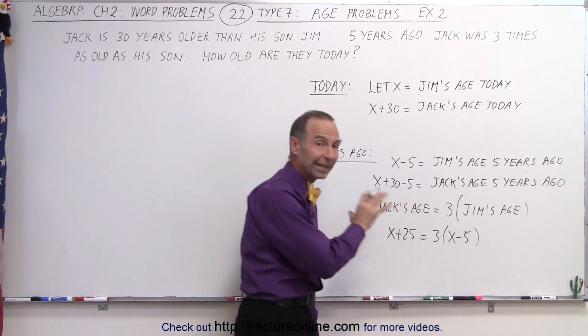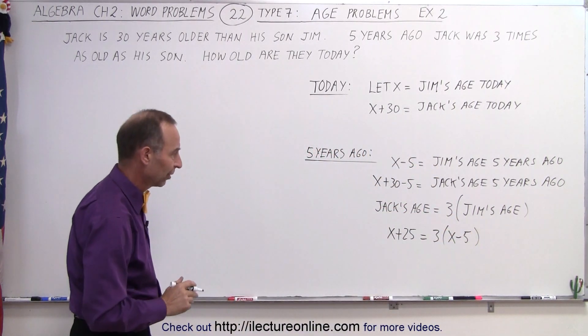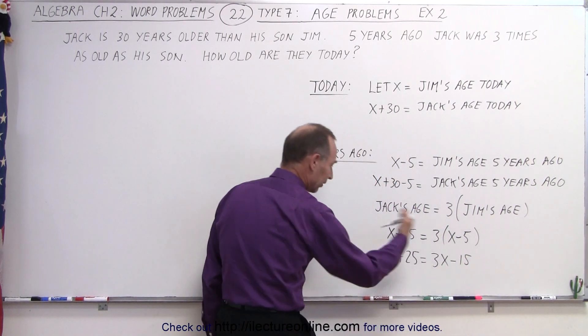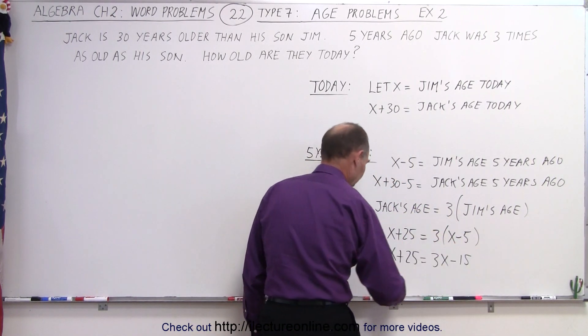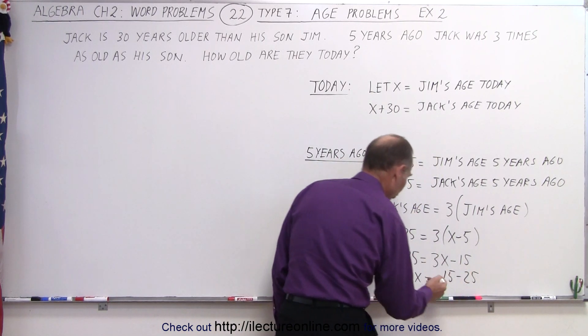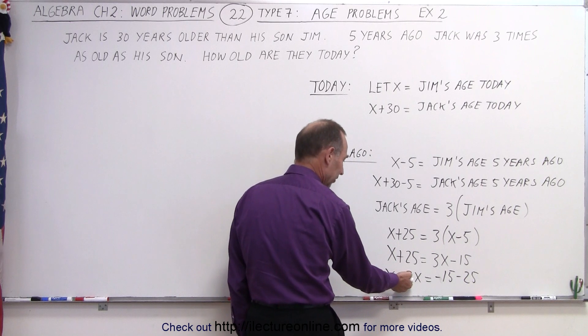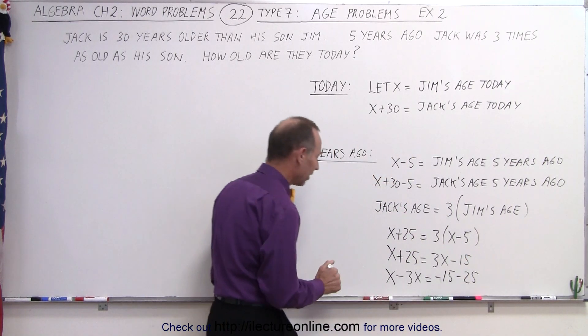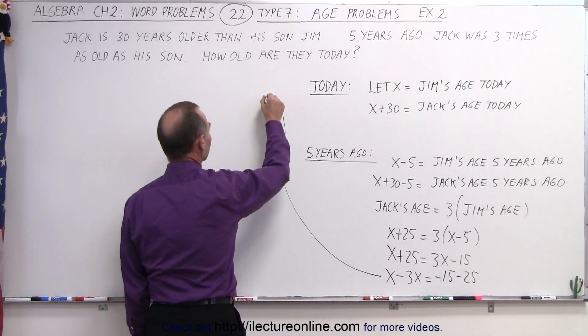And now we solve that equation for x. So we first distribute the right side. Now we move all the x's to one side, all the numbers to the other side. Minus 25, notice when I move the 3x across it becomes a negative 3x. The plus 25 becomes a minus 25 when I cross the equal sign.